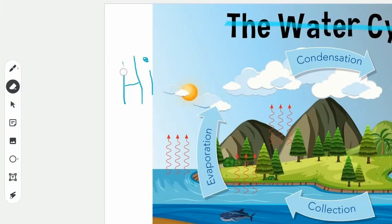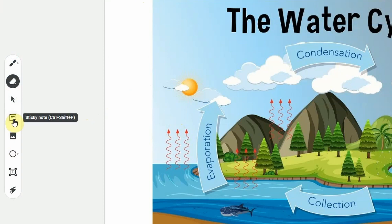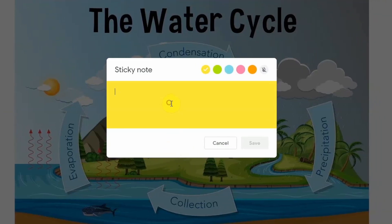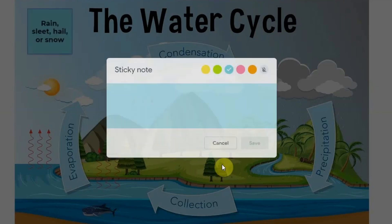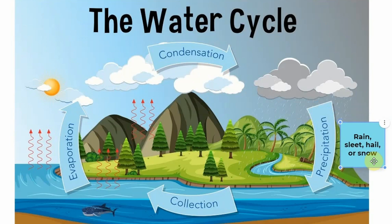The next one is the eraser, so you can use that to erase anything. If you want to erase everything you've added to the slide, I suggest just clicking 'Clear Frame' because it'll save you a lot of time. The next one I love is the sticky note. You can add notes to it — for example, rain, sleet, hail, or snow — and you can also change the background color of the sticky note. Save it when you're done and then you can click and drag the sticky note next to 'Precipitation' to show the different types.